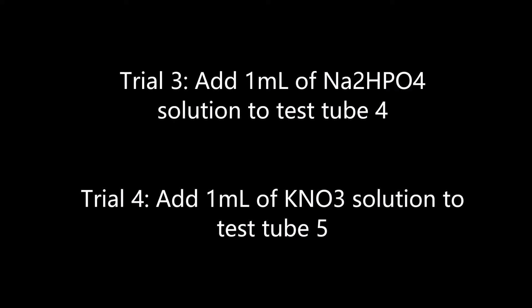For trial 3, add 1 ml of Na2HPO4 solution to the fourth test tube. For trial 4, add 1 ml of KNO3 solution to the fifth test tube. You can dispose of all the solutions directly into the sink because they are very dilute.